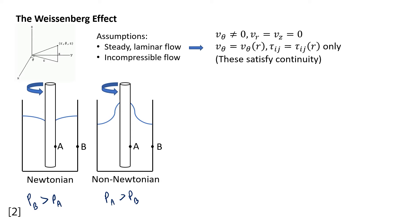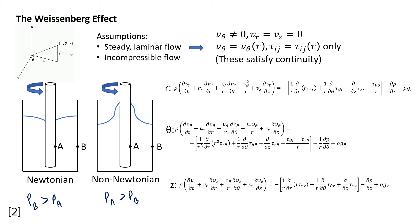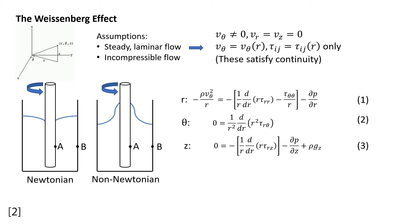We can take these assumptions and statements and use them to simplify the equations of motion. Once we've simplified the equations down, here are the simplified equations for the r, theta, and z directions. Now we have these equations, but you may be wondering: what is the stress tensor tau_ij?